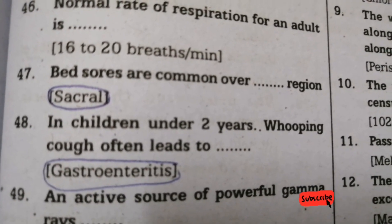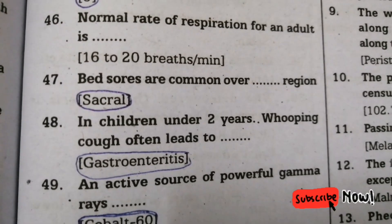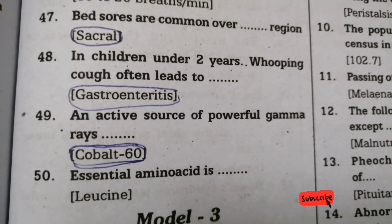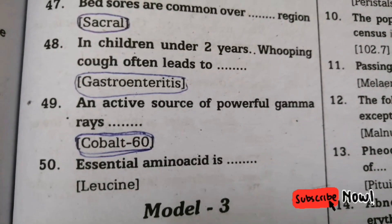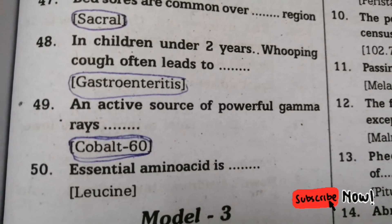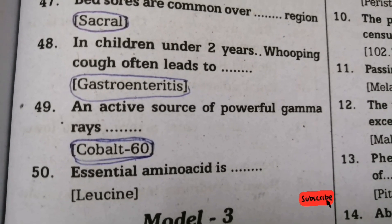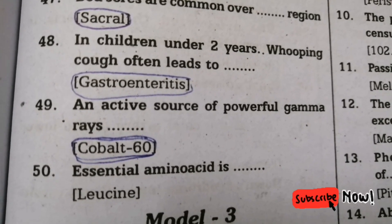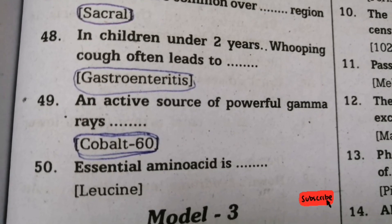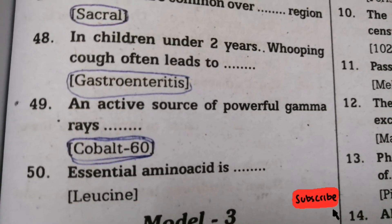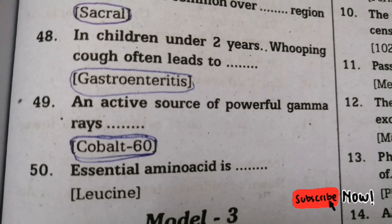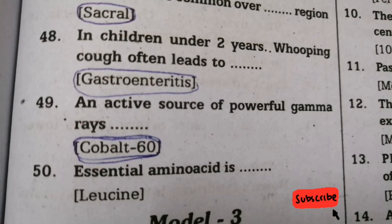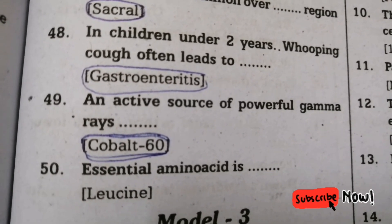Next question: an active source of powerful gamma rays — answer is Cobalt-60. Next question: essential amino acid — the right answer is leucine. This is just a model question for nursing competitive exams. If you have any questions, like this video and share it with your friends. We will meet in the next video. Bye bye, thank you.